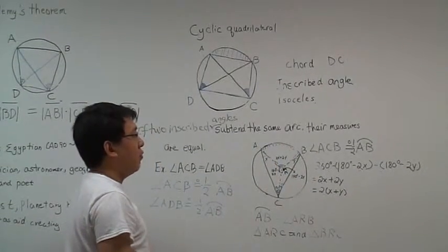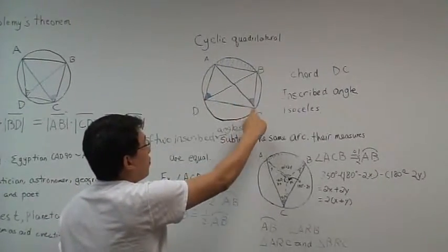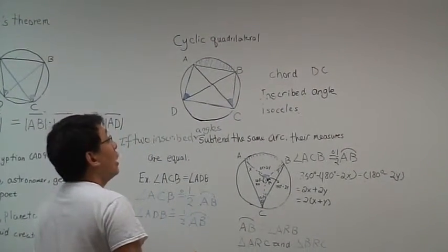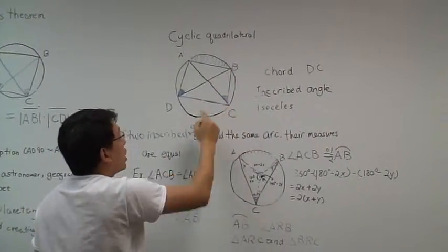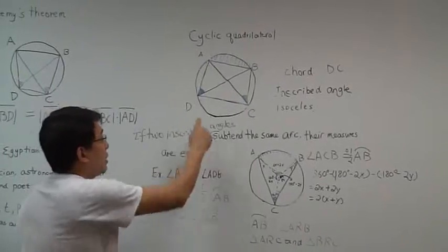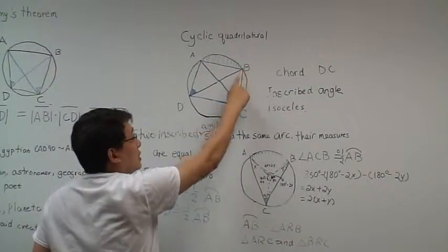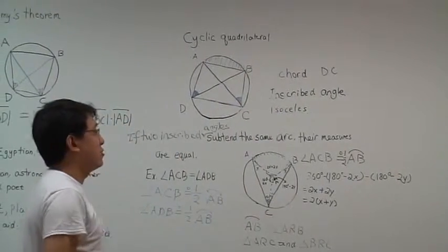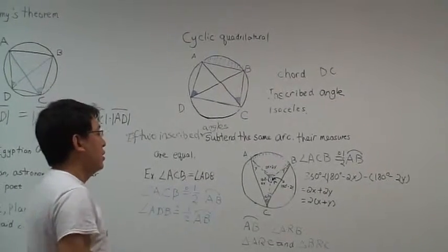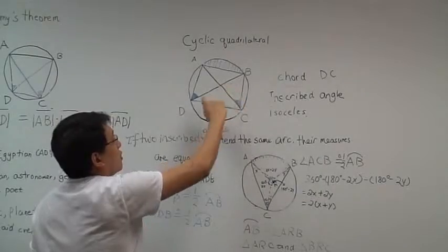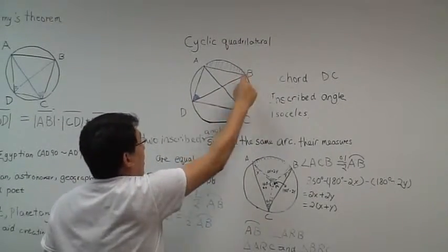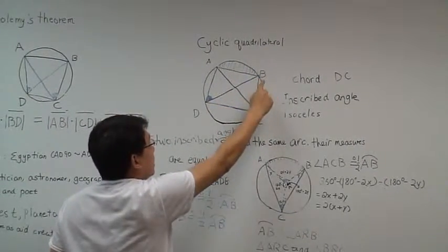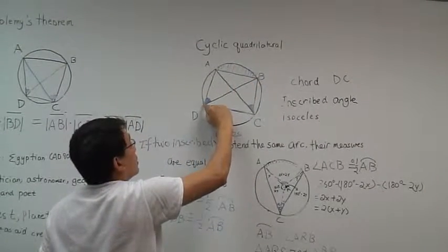What I mean by inscribed angle: when you have two points and we connect those two points, we call that a chord. And if you have two chords with the same endpoint, we call that an inscribed angle. So DC is a chord and BC is also a chord and they both connect to C, so angle DCB is an inscribed angle. We calculate the inscribed angle as: the degree of the inscribed angle equals half of the arc of those two endpoints connected. Which means angle BCD is half of the arc DAB.